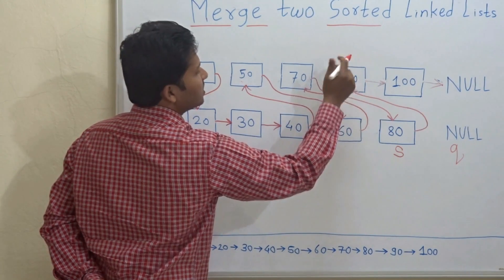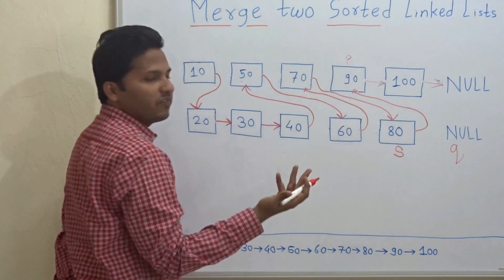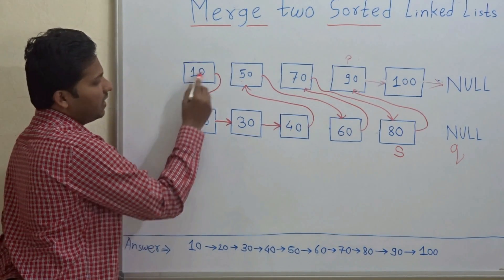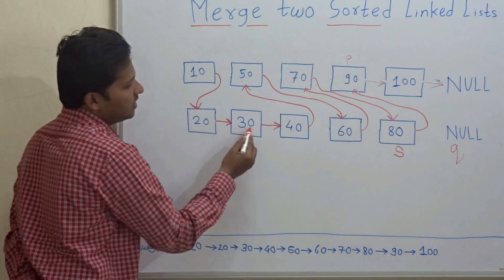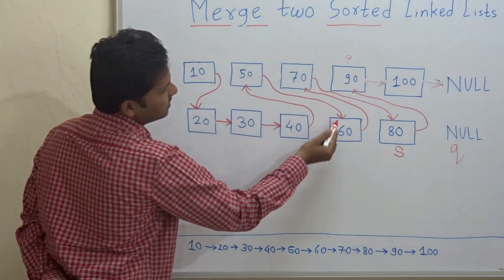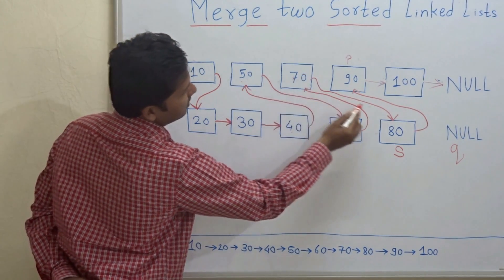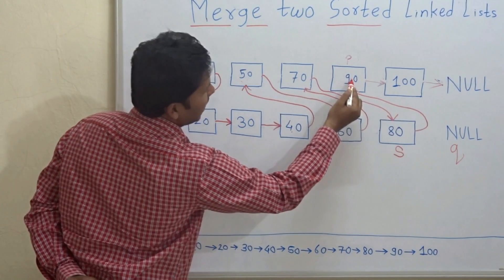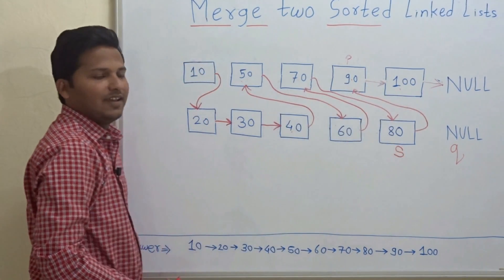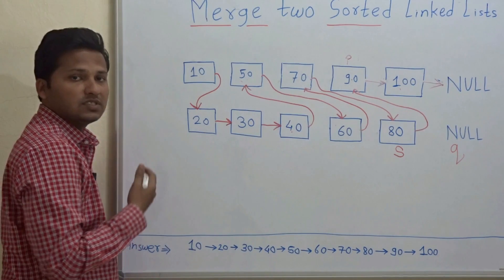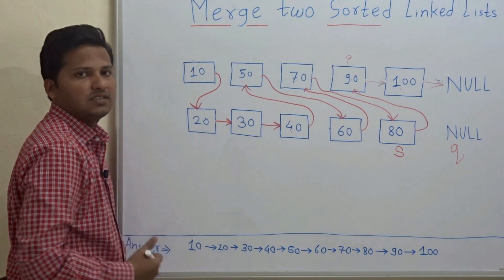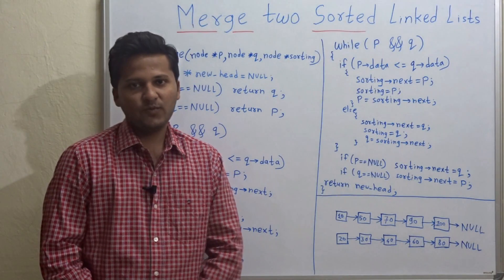So we can figure out the sorted linked list. Just check: 10, 20, 30, 40, 50, 60, 70, 80, 90, 100, and null. This is how we have merged two already sorted linked lists. Let's see the program now.